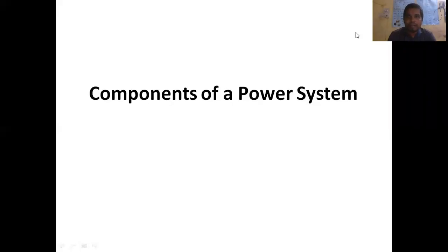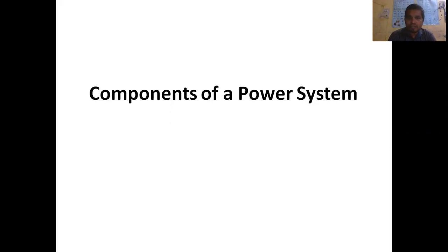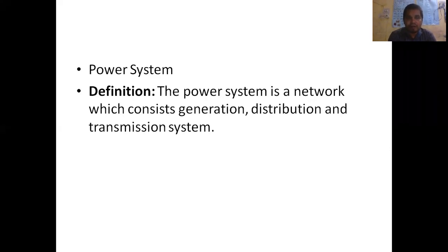Good morning, dear students. Today we are going to discuss about the components of a power system — an electrical power system. The power system is a network which consists of generation, distribution, and transmission system.